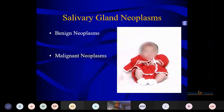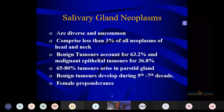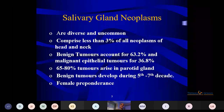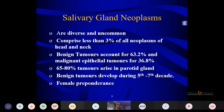Salivary gland tumors are broadly classified as benign and malignant neoplasms. They are diverse and uncommon, comprising 3% of all head and neck tumors. Benign tumors are more common at around 64.3% and malignant tumors comprise 36.8%. The most common site is the parotid gland, consisting of 65–80% of cases.